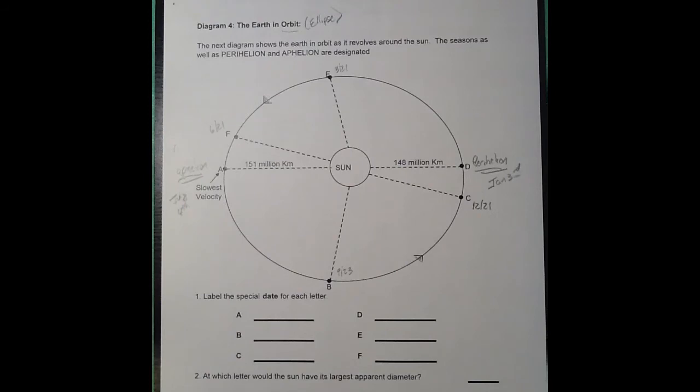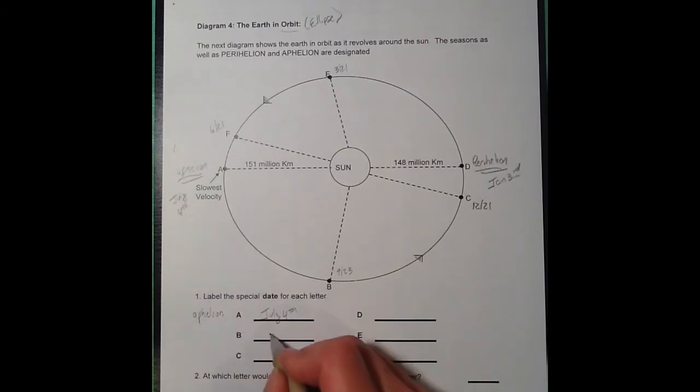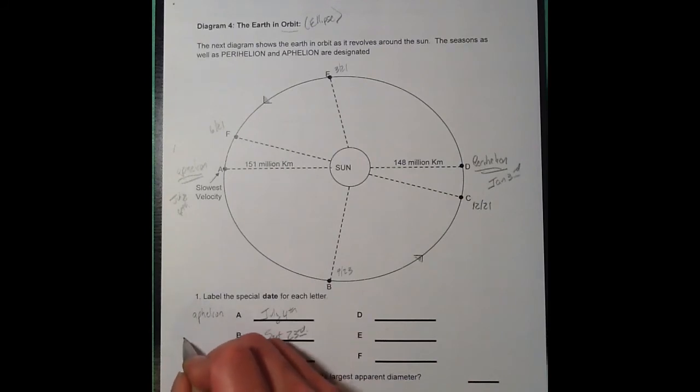Label the special date for each letter. Letter A is around July 4th, but I would call that aphelion. Letter B, we already did, is September 23rd, but that would be, at least for us, the fall equinox.